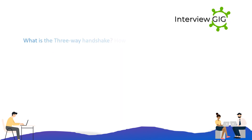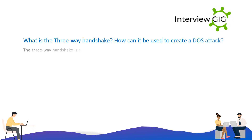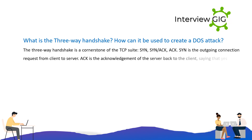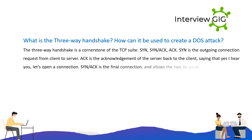What is the three-way handshake and how can it be used to create a DoS attack? The three-way handshake is a cornerstone of the TCP suite: SYN, SYN/ACK, ACK. SYN is the outgoing connection request from client to server. ACK is the acknowledgement of the server back to the client, saying yes, let's open a connection. SYN/ACK is the final connection step, allowing the two to communicate.